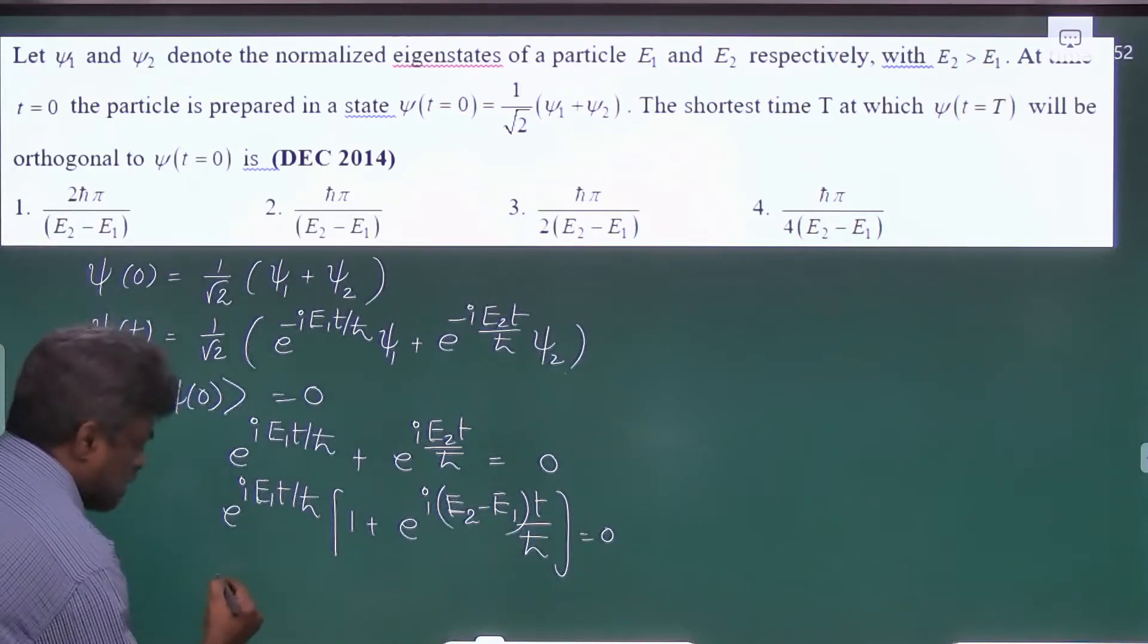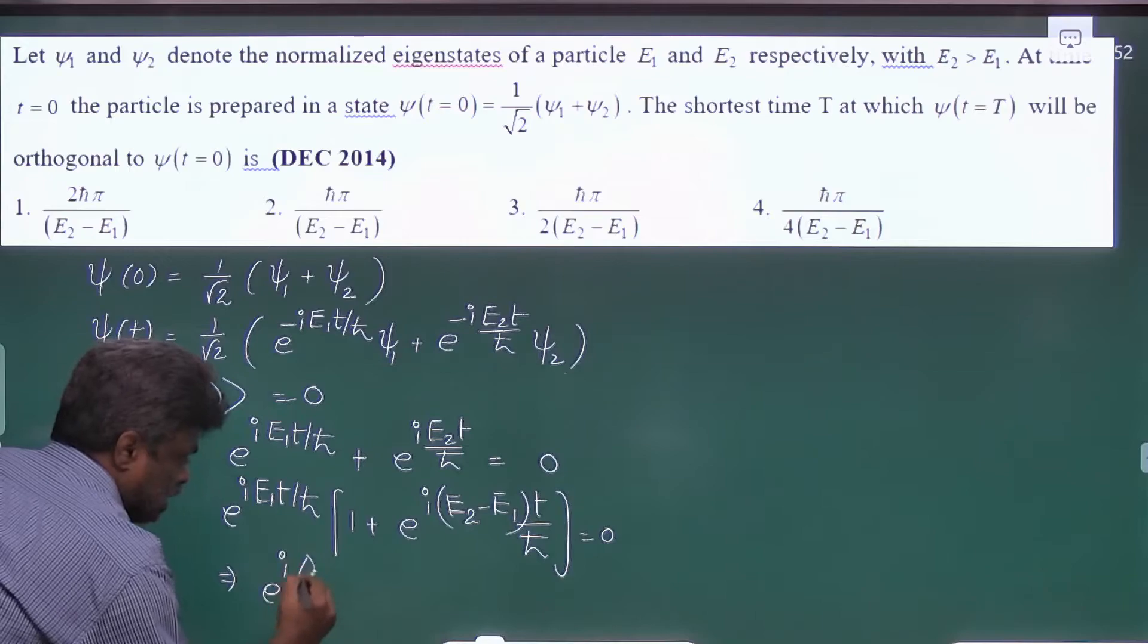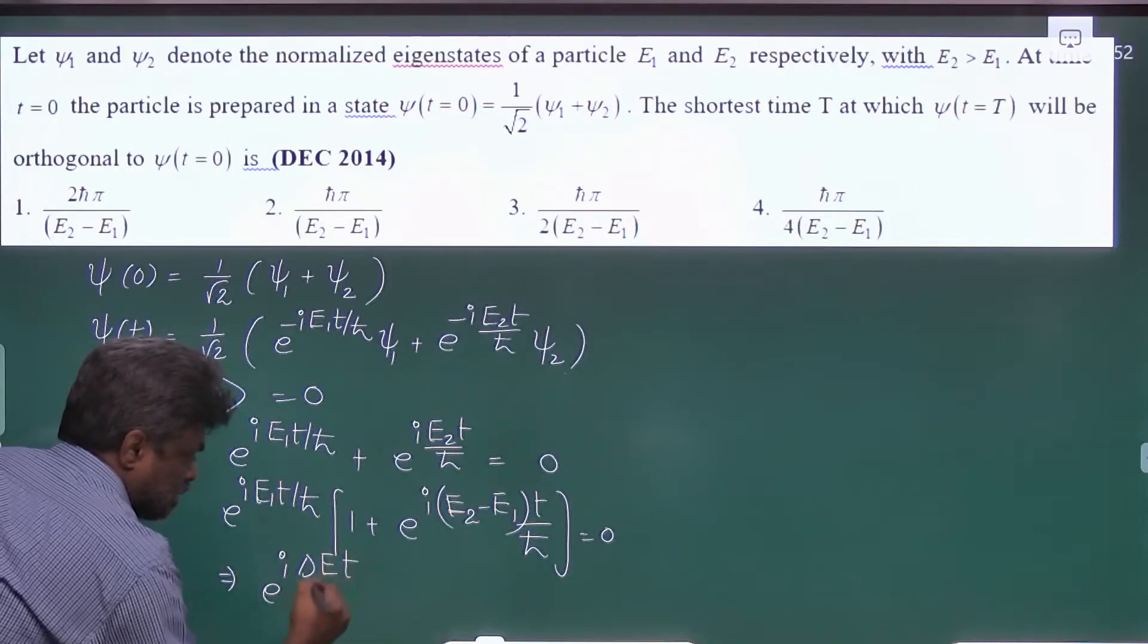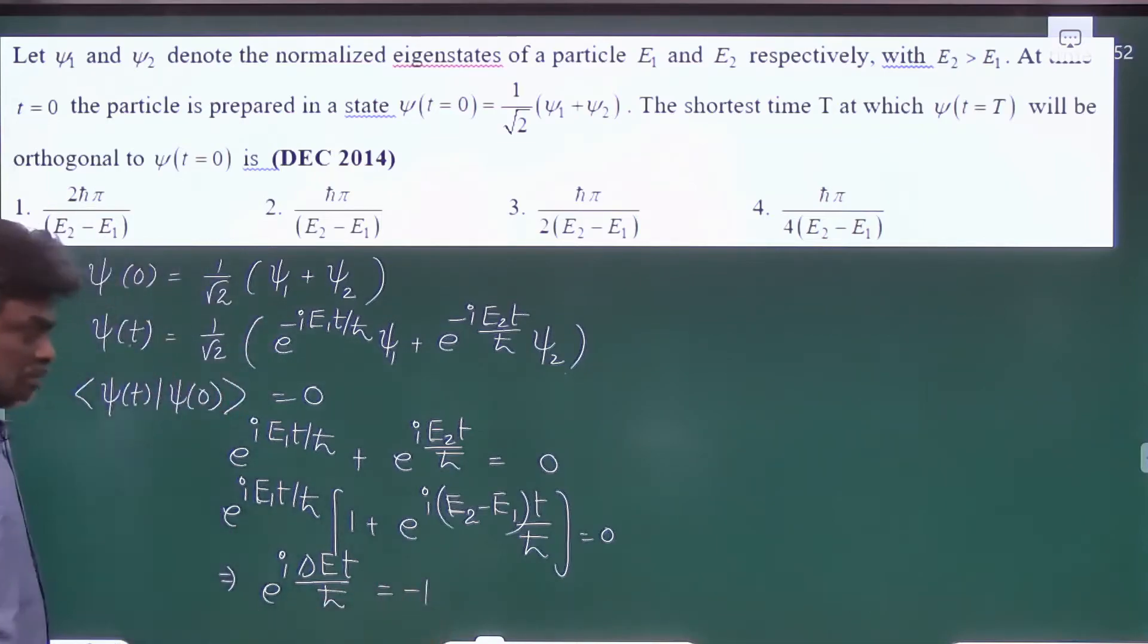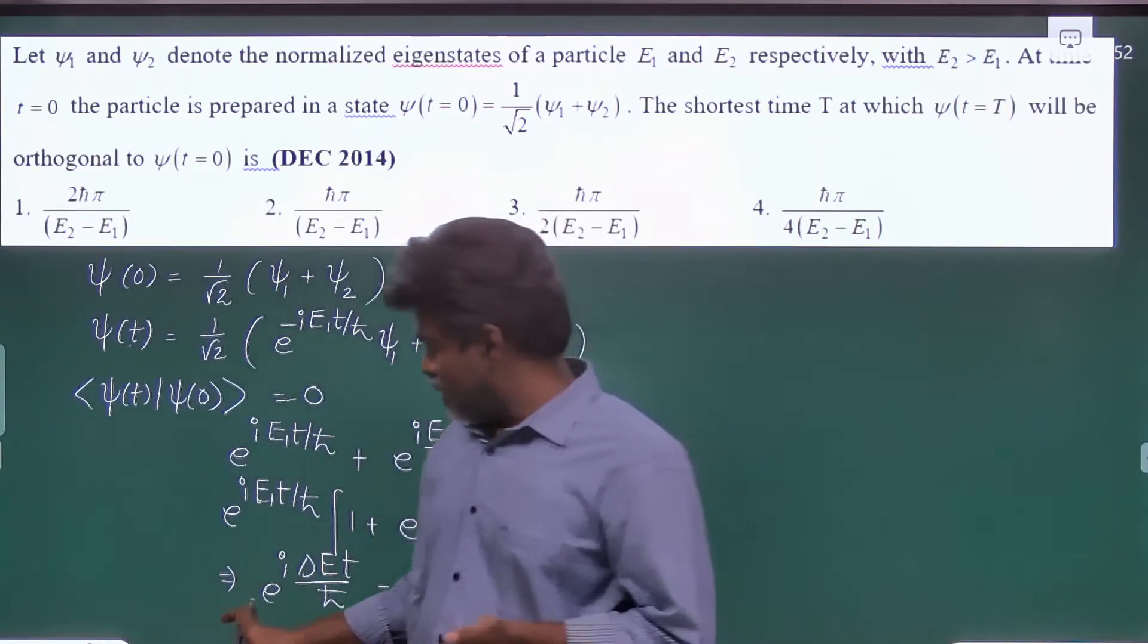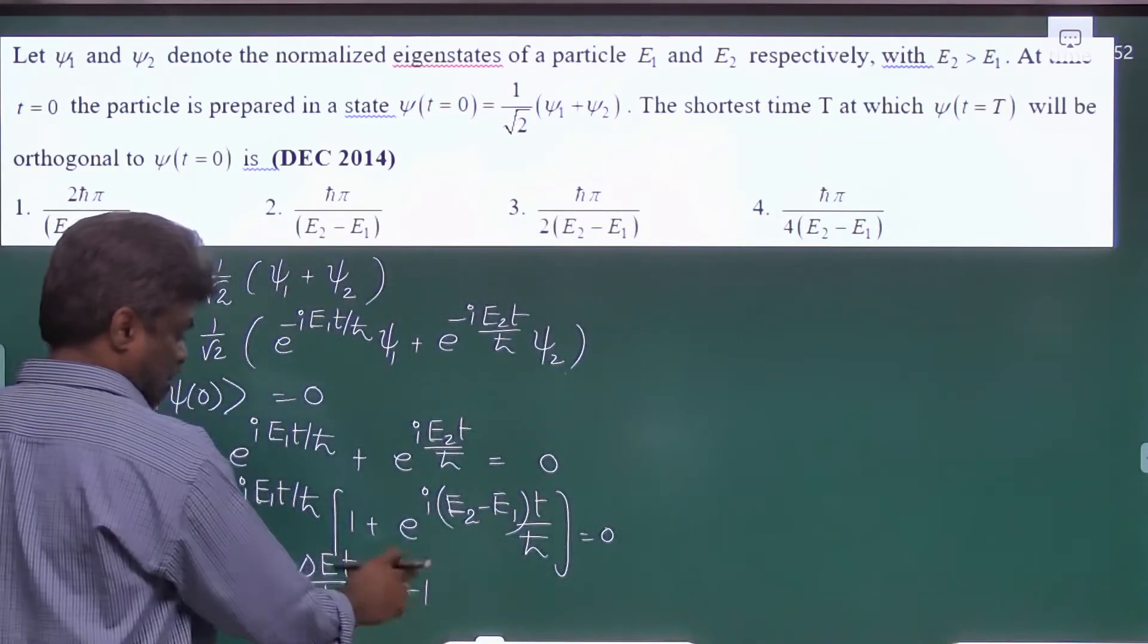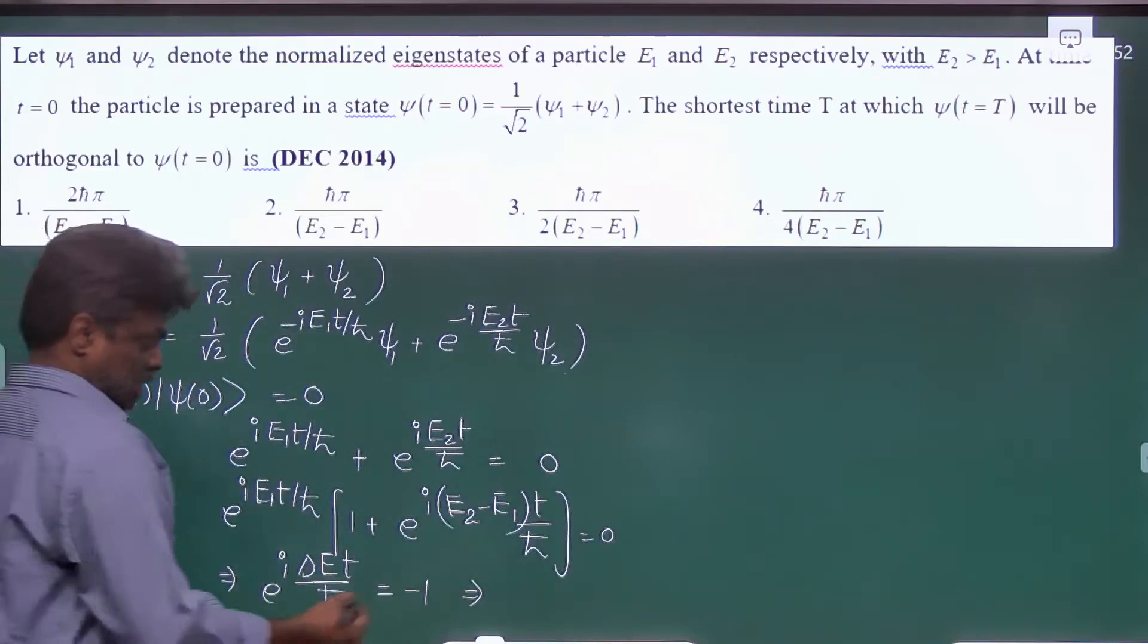And from this we can write this term e raise to i, I can take delta E simply t by h cross, this is equal to minus 1. And if you equate the real and imaginary parts, because here we have only real part,